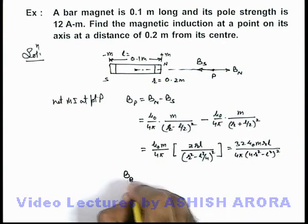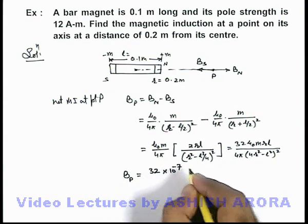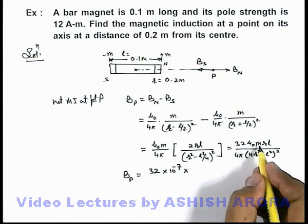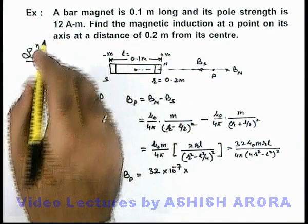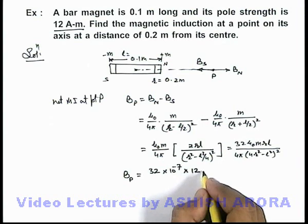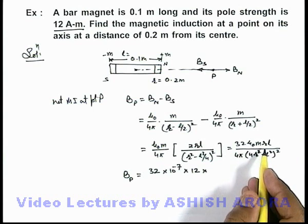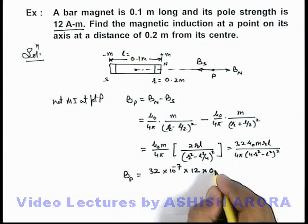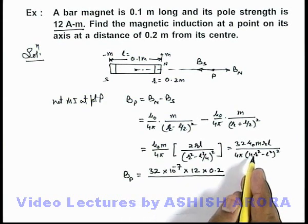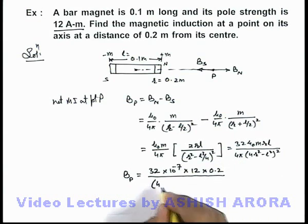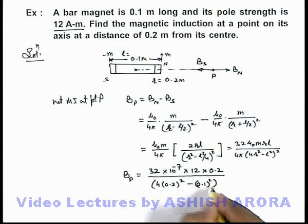We substitute the values, this magnetic field at point P will be given by 32μ₀/4π we can write as 10⁻⁷ multiplied by the product of m and l, which is the dipole moment of this magnet, which is already given as 12 ampere meter, we can take it 12. Multiplied by here you can consider the value of r to be 0.2 meter. Then divided by if we substitute the values of r square and l square, here we are getting it 4 times 0.2 whole square minus 0.1 whole square, whole square.